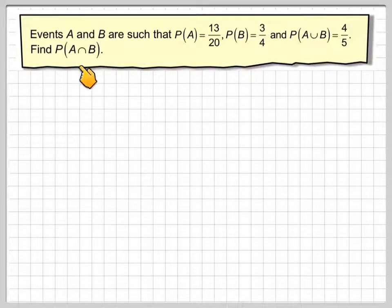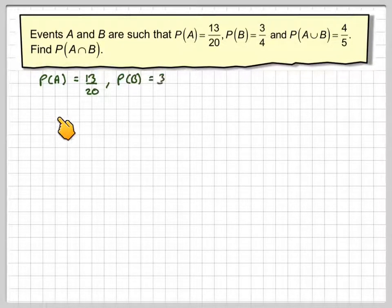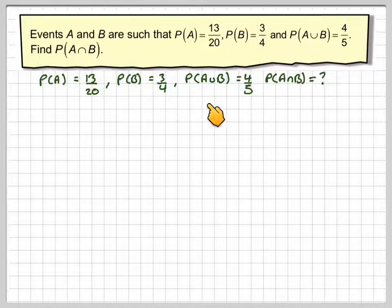Now a great temptation is to multiply this by this, which you can't do unless you know that the events are independent, which we'll look at in a later video. So the probability of A is 13 out of 20, the probability of B is 3 out of 4, the probability of A union B is 4 out of 5. We need to find the intersection.